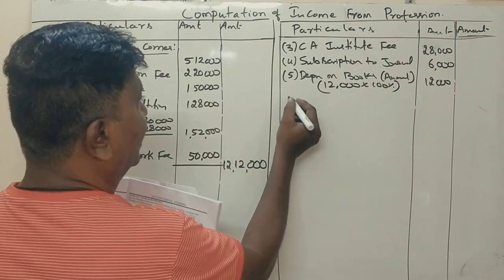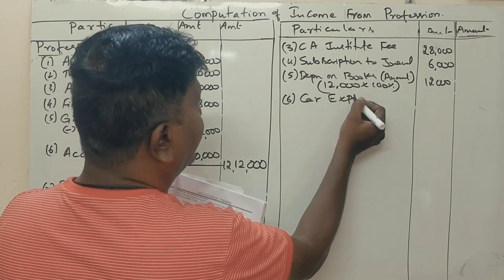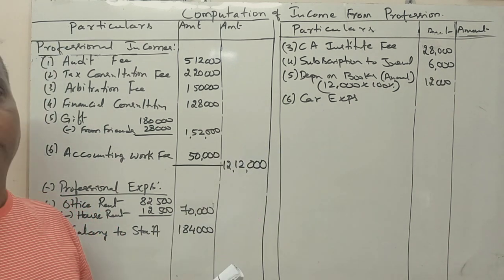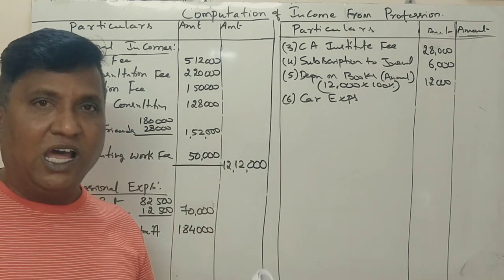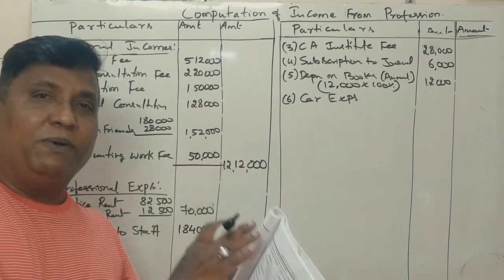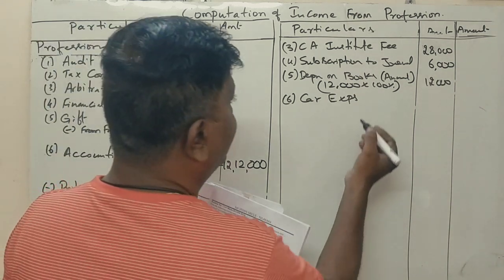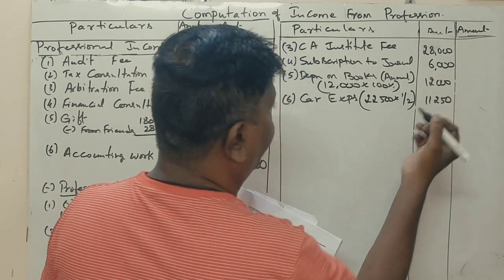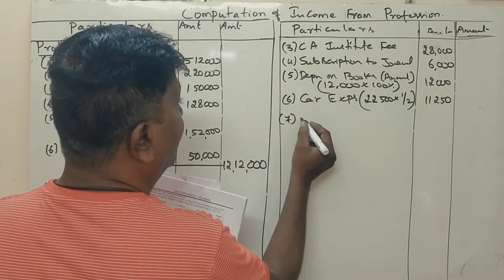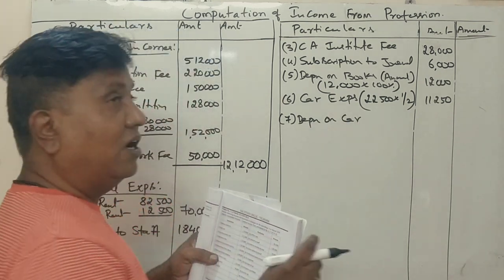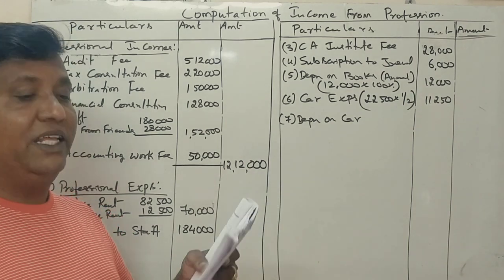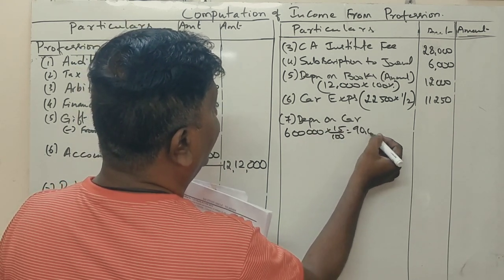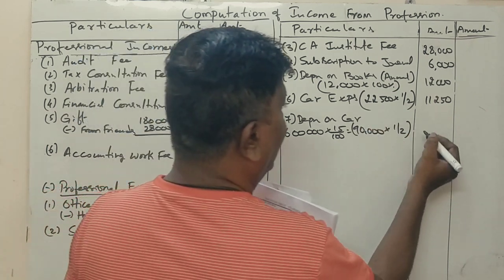Car expenses: half of the car is used for private purpose, so only 50% is allowed. Car expenses allowed: 11,250 rupees. Purchase of car — depreciation on car at 15%. Depreciation on car (professional portion): 45,000 rupees.